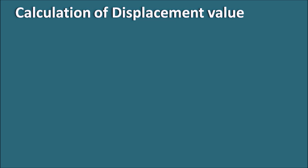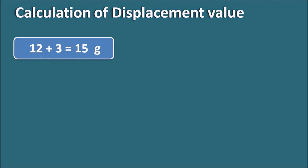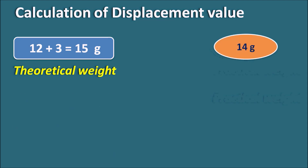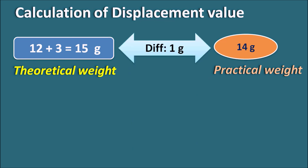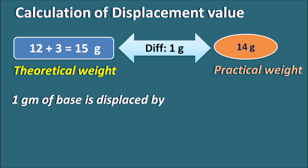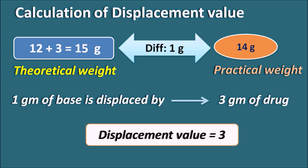The displacement value can also be calculated another way. The total theoretical weight is base (12g) plus drug (3g) = 15g. The practical weight is 14g, giving a difference of 1g. So 1g of the base is displaced by 3g of the drug, meaning the displacement value equals 3. Displacement value is defined as the weight of the drug that displaces 1g of the base.